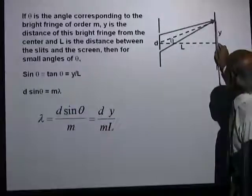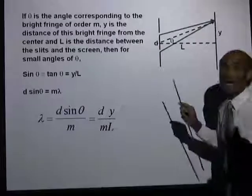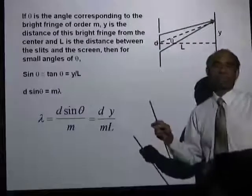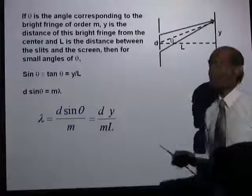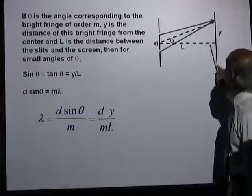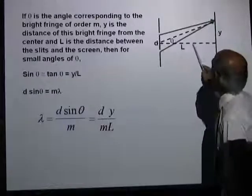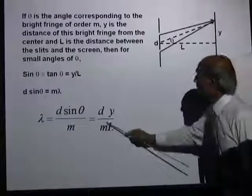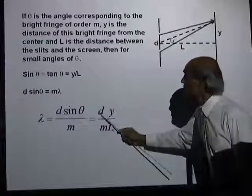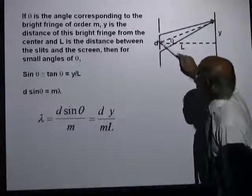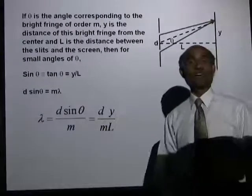So lambda equals D times y divided by m times L, where y is the distance of the mth bright fringe from the center, L is the distance between the slits and the screen, m is the order of the fringe, and D is the distance between the two slits. You can calculate the wavelength of that light — it is a very effective method, and if you major in physics you will be doing this experiment as a junior in college.